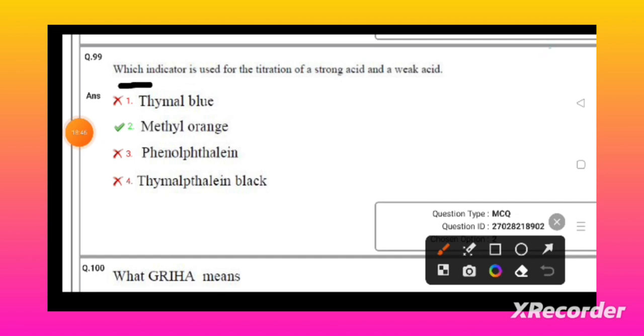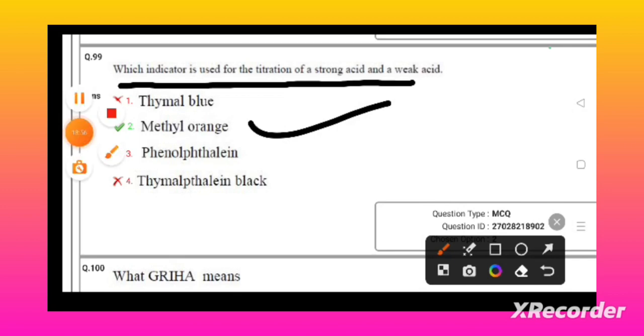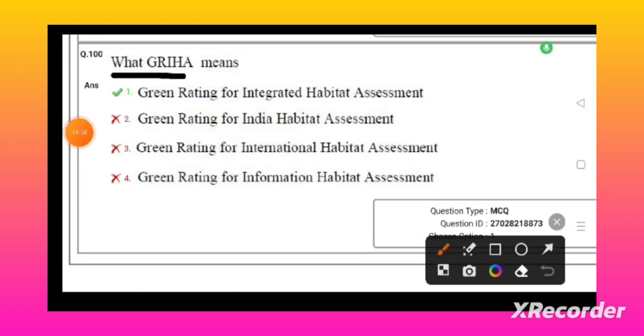What does GRIHA mean? Green Rating for Integrated Habitat Assessment is the full form of GRIHA. By this we will end up the session. We completed the Telangana SET question paper of Paper 2 Environmental Science completely. Thank you so much. Please like, share, and subscribe my channel for further classes. Thank you so much. This is your Ram Sai signing off.